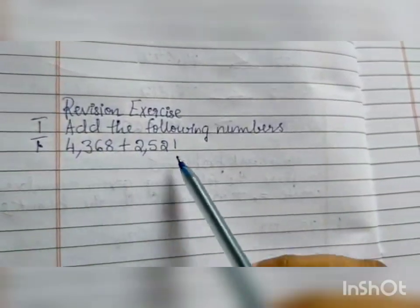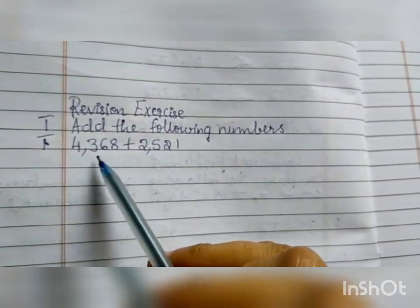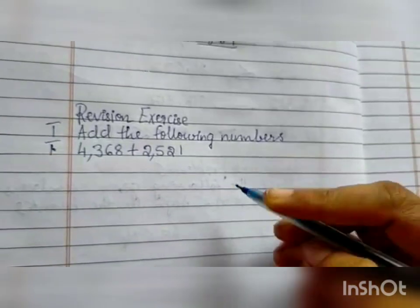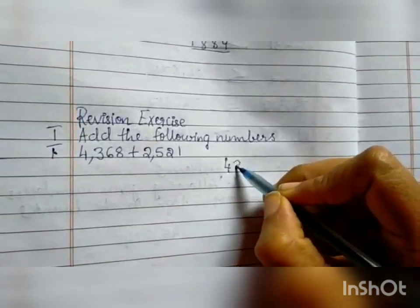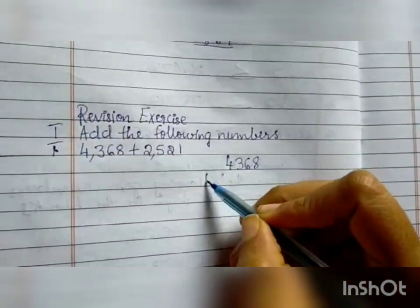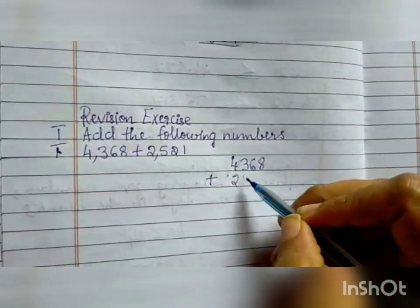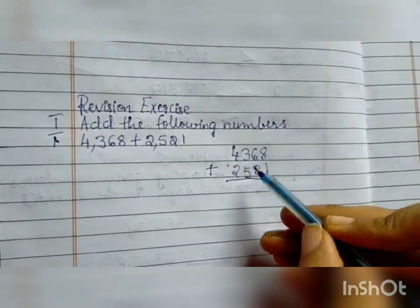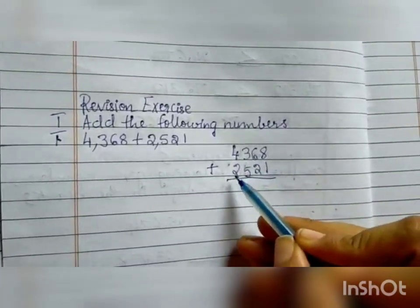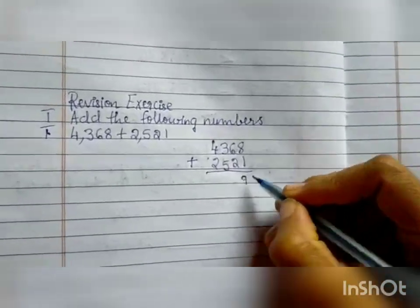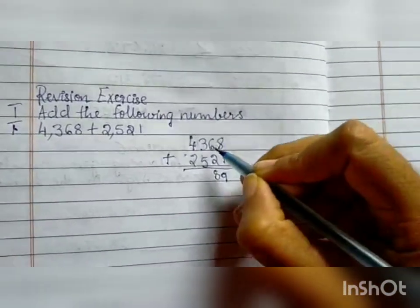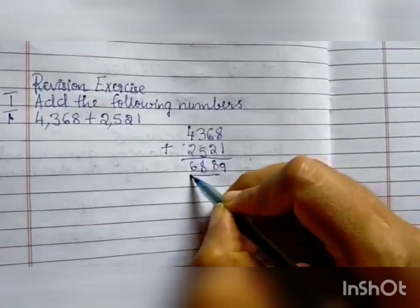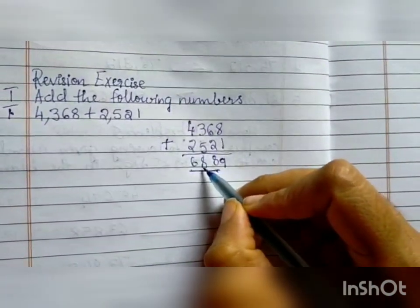Roman numeral 1 — add the following numbers. The numbers are 4368 plus 2521. We need to add both numbers: 4368 plus 2521. We add from the unit place, then tens, then hundreds, and last the thousands place. 8 plus 1 is 9, 6 plus 2 is 8, 3 plus 5 is 8, and 4 plus 2 is 6. So the answer is 6,889.